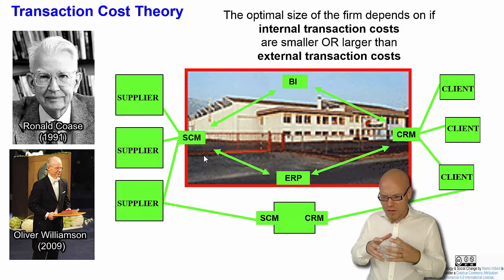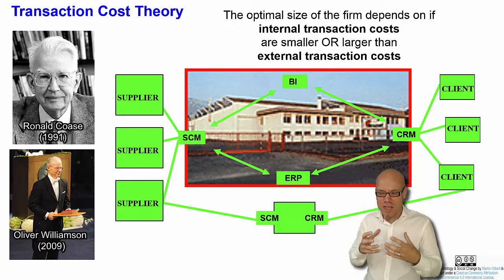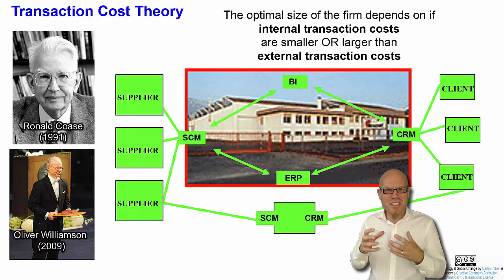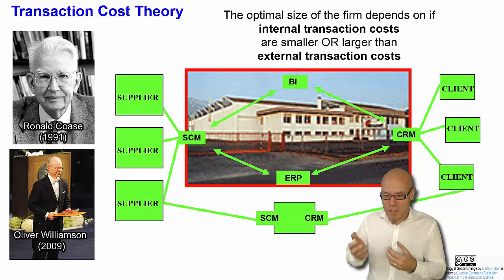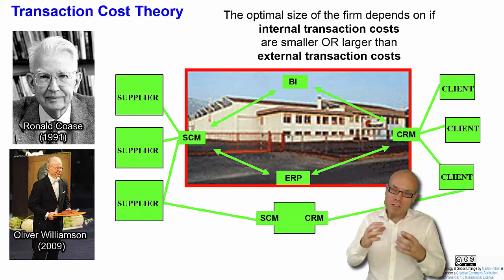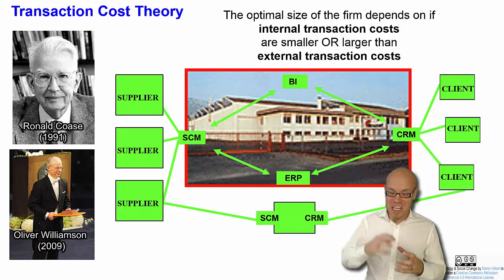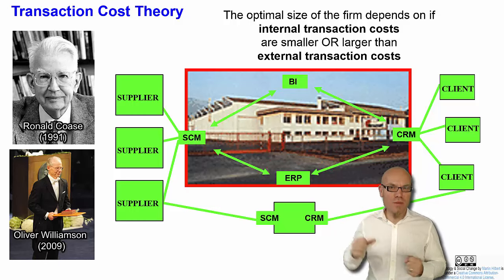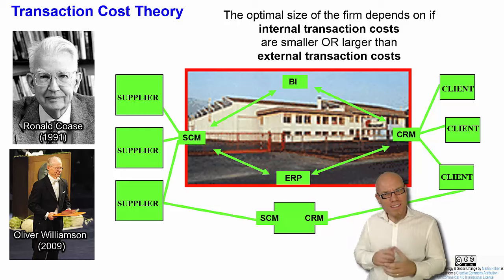On the other hand, if your company is too big and does too many things and the internal transaction costs are too high — for example, you have your own accountants and lawyers in the company, and it's not very efficient — what you do is outsource, for example to an accounting firm or a law firm, and as a result your company gets smaller. So if internal transaction costs are low, you insource and grow the company; if external transaction costs are really low, you outsource and shrink the size of your company.